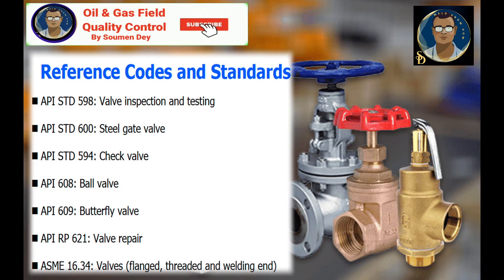For valve testing we have a few basic international codes and standards: API standard 598 for valve inspection and testing, API standard 600 for steel gate valve, API standard 594 for check valve, API 608 for ball valve, 609 for butterfly valve, RP 621 for valve repair, and ASME 16.34 for flanged, threaded, and welding end valves. These are all very popular standards, though there are many other country-specific standards being followed as well.